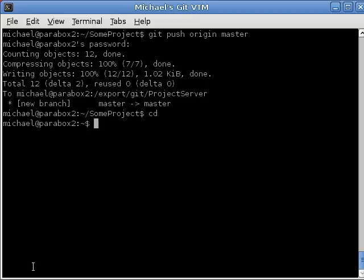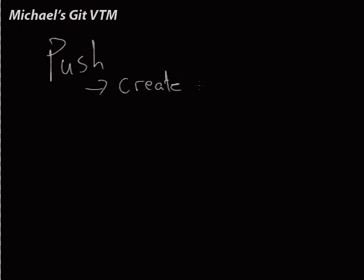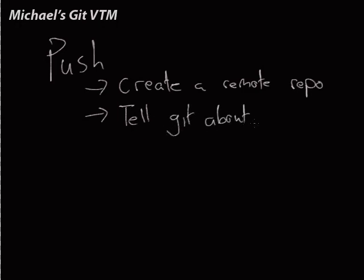At this point we know how we can push changes. We create a remote repository on the actual remote, then we tell git about it using git remote add, and then we type git push to push our changes.